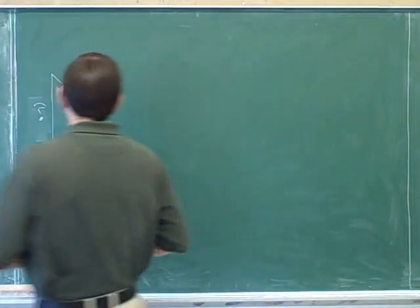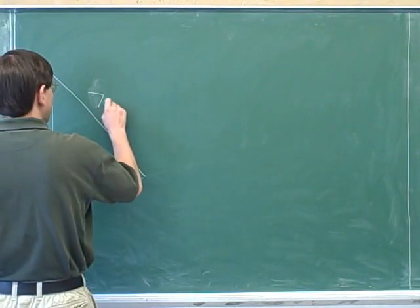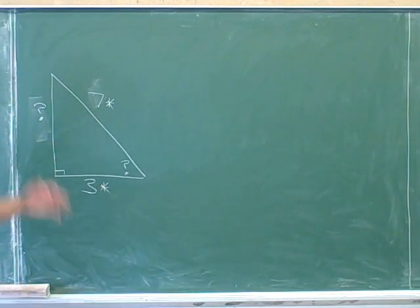For example, we've been indicating the given information with asterisks. So let's continue to do that, so that later on when I figure out new numbers, I won't forget that these were the numbers that I was originally given.